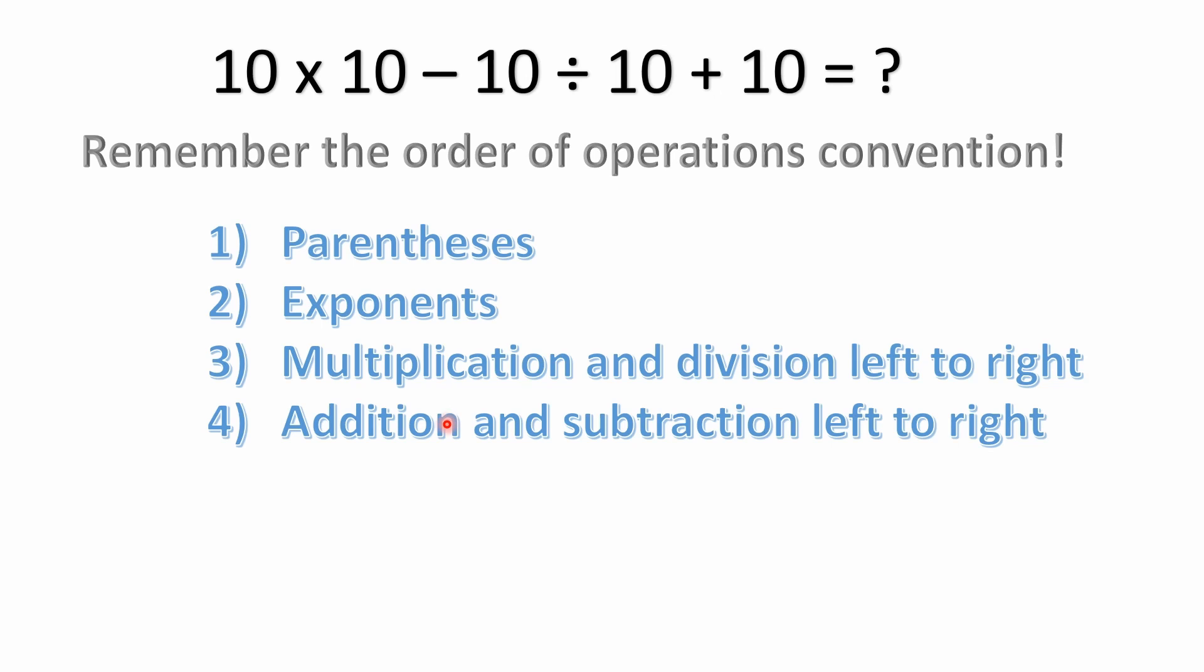All right, so first of all, remember the order of operations convention. That's something that, at least in North America, everybody learns in elementary school, I'd say at least by the fifth grade, if not sooner. The order of operations consists of parentheses first, then exponents, then multiplication and division left to right, and then addition and subtraction left to right. So there's just four steps.